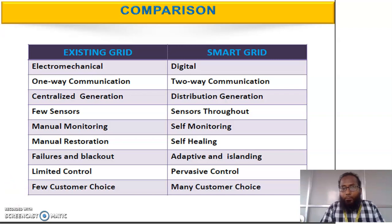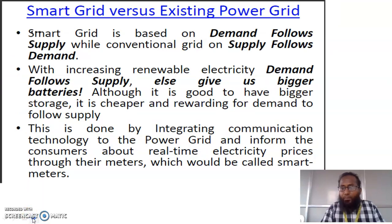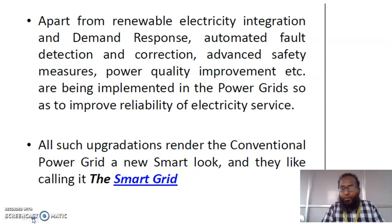More sensors are used in smart grid compared to the previous grid system. A key differentiation is that smart grid consists of many customer choices, giving importance to customers and getting feedback from them. The smart grid is based on demand following supply, whereas in the previous grid, supply follows demand. This is done by integrating communication technology to the power grid and informing consumers about real-time electricity prices through their smart meters.